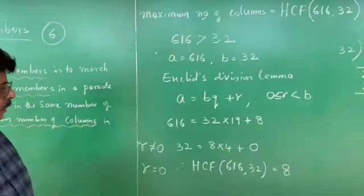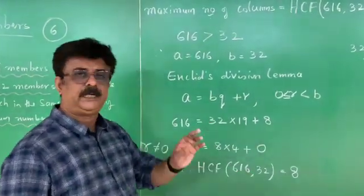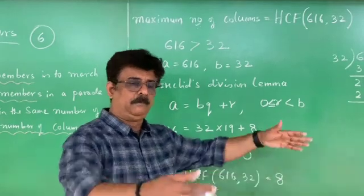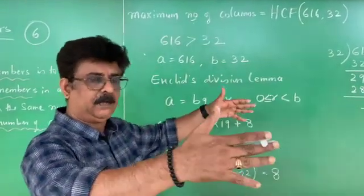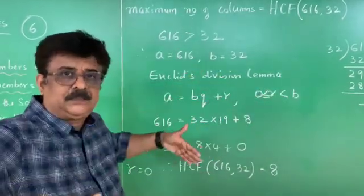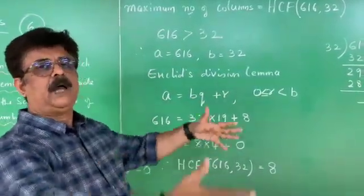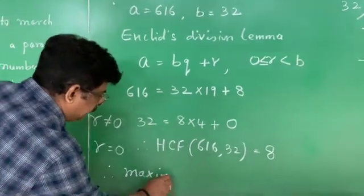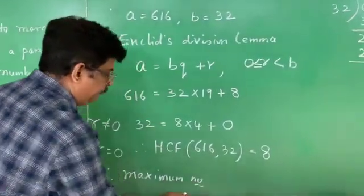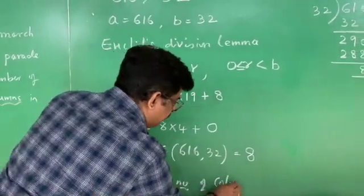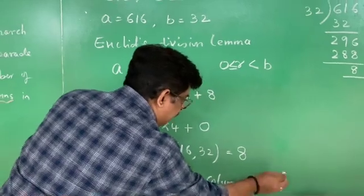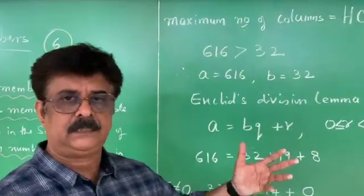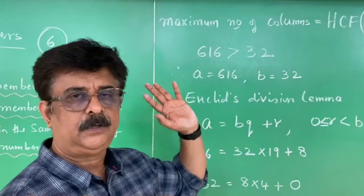8 is the HCF of 616 and 32. This means the maximum number of columns is 8 — the 32-member band and the 616-member army can both form 8 columns and march in correct alignment. Maximum means highest, and we found the highest common factor. Write and practice this.